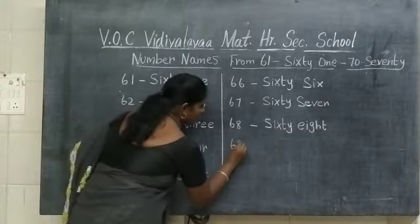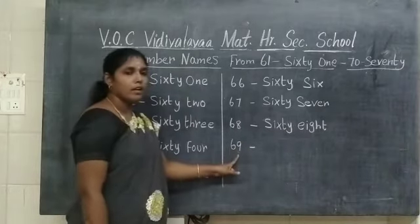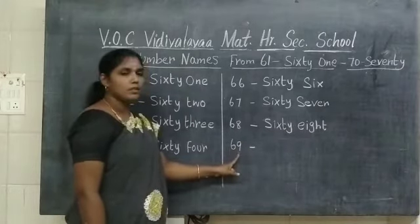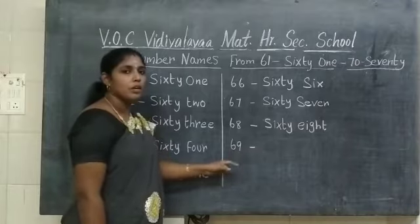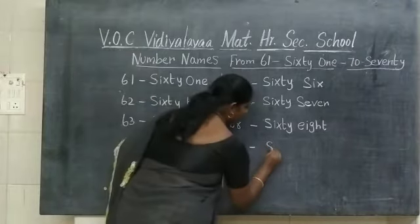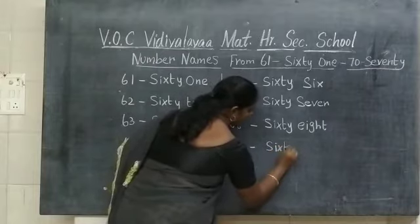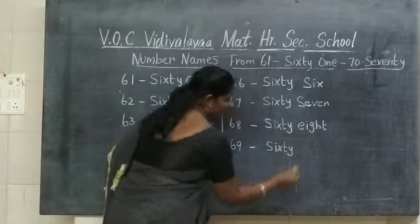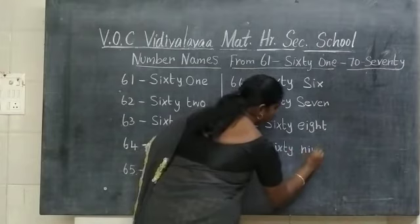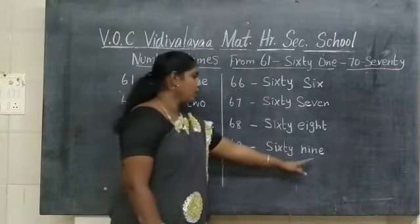6, 9 — 69. What number is this? 69. What is the spelling of number 69? S-I-X-T-Y N-I-N-E. 69.